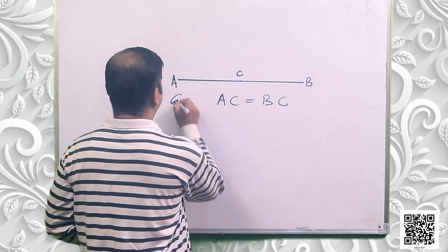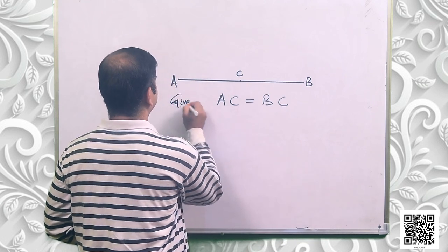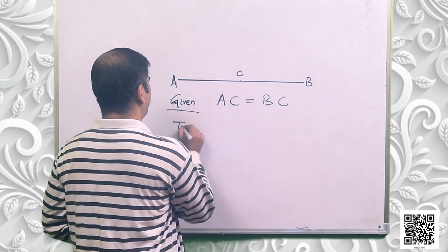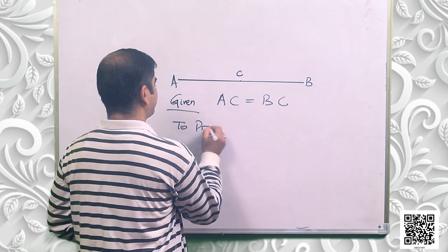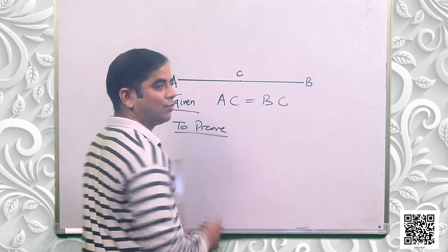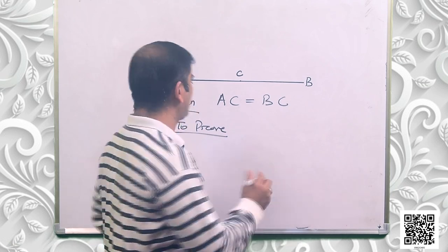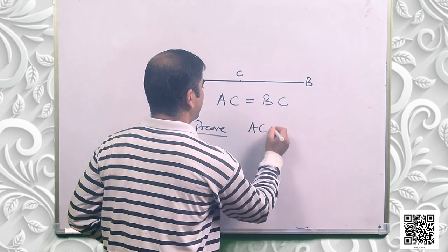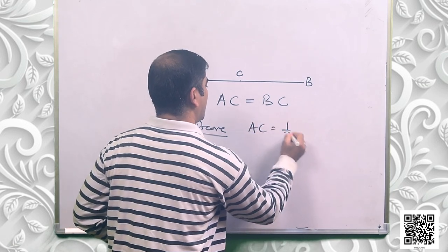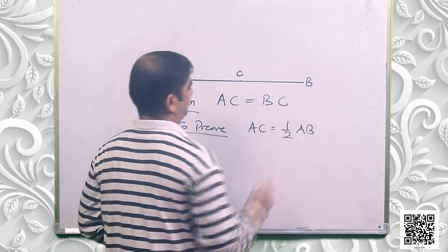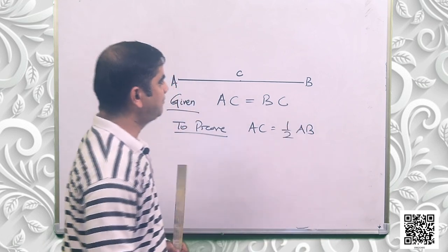This is your given, and to prove — what we have to prove? AC is equal to half AB.